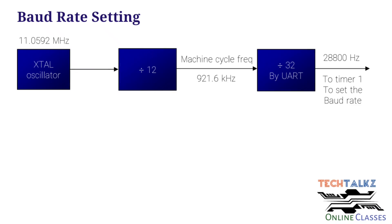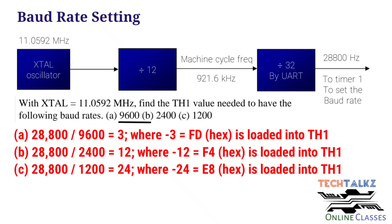For Timer 1 frequency, suppose the crystal frequency is 11.0592 MHz. The machine cycle frequency is divided by 12, giving 921.6 kHz. The UART circuitry then divides by 32, so Timer 1 gets 28800 Hz. The required baud rate is 9600 bps.